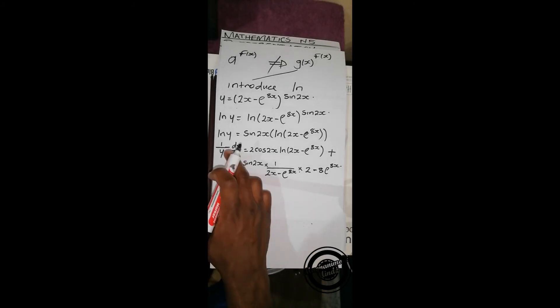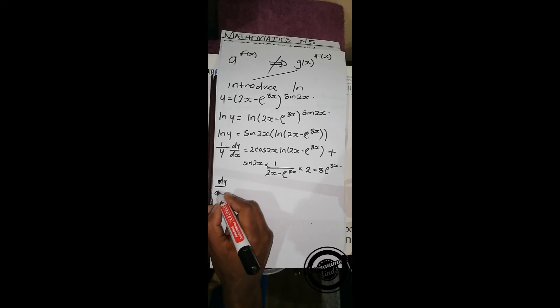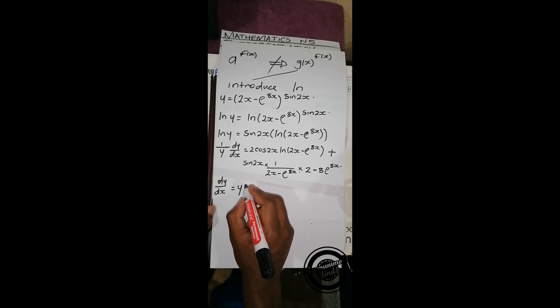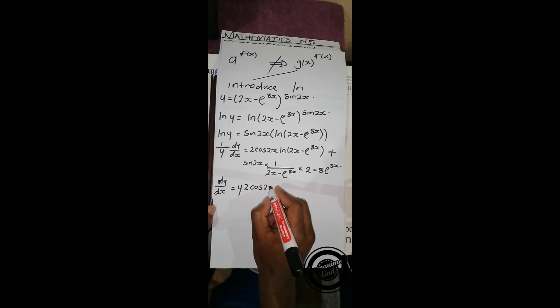this y will cancel out. So this side will be left with dy/dx equals y times 2cos(2x)